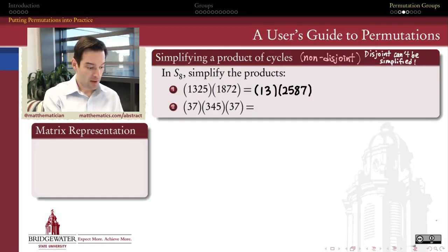I want to use this approach to study this product of three non-disjoint cycles: (3 7), (3 4 5), (3 7). So how does it work?